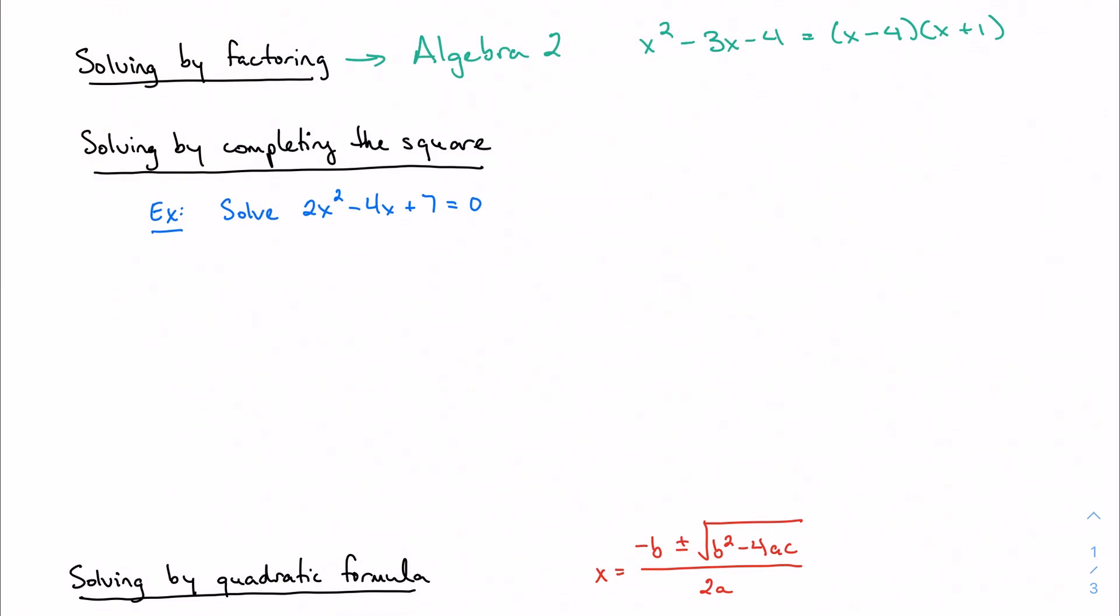Completing the square was an Algebra 2 topic as well, but often needs a little more attention because the process can be complicated sometimes. Completing the square is going to look and feel a little bit like vertex form, like when we try to turn something from standard form into vertex form.